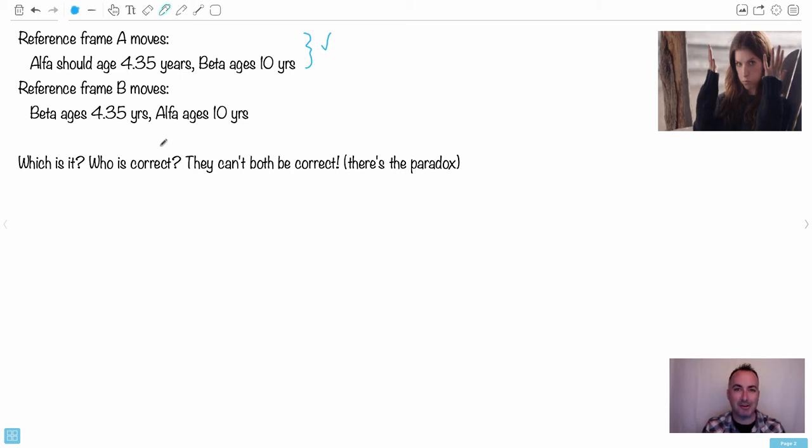So what is it? Who's correct? Who's right? They can't both be right. This is exactly why it's a paradox. The paradox is because one way of looking at the situation says one thing. The other way says the other thing. And they're opposites. They're mutually exclusive. They can't both be right.